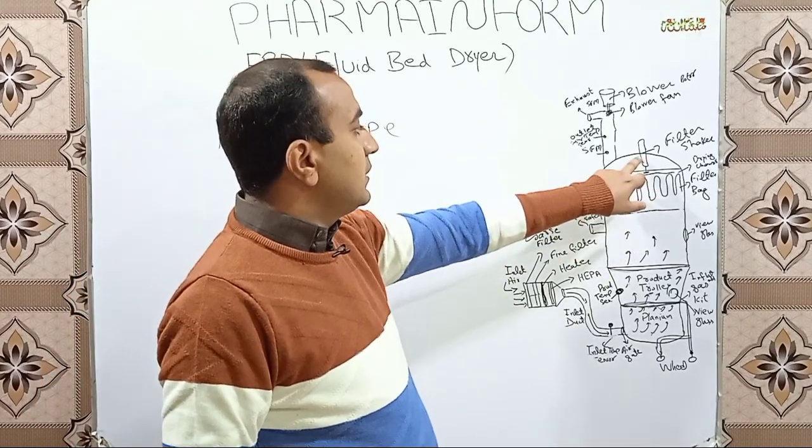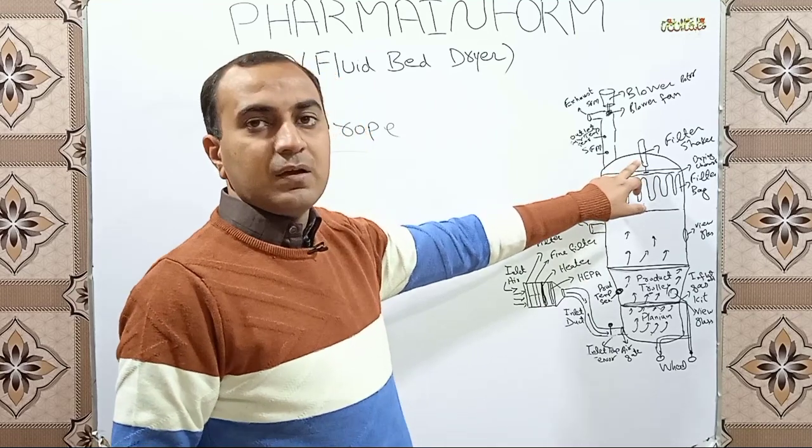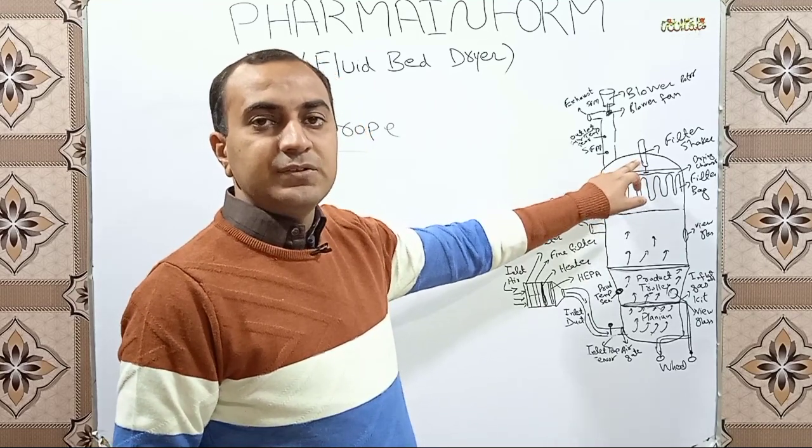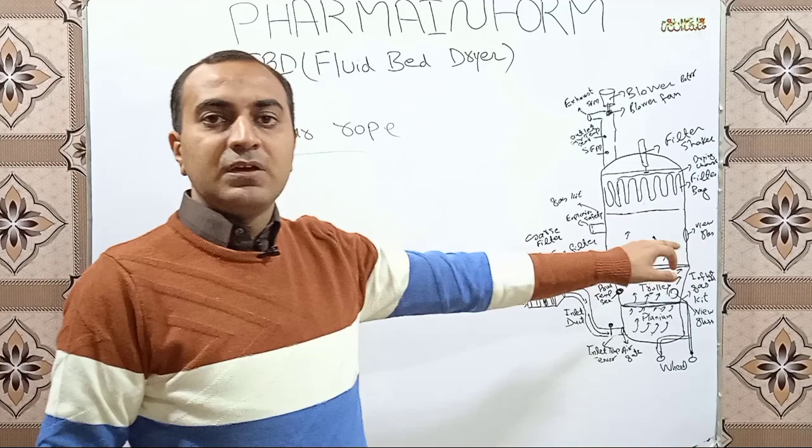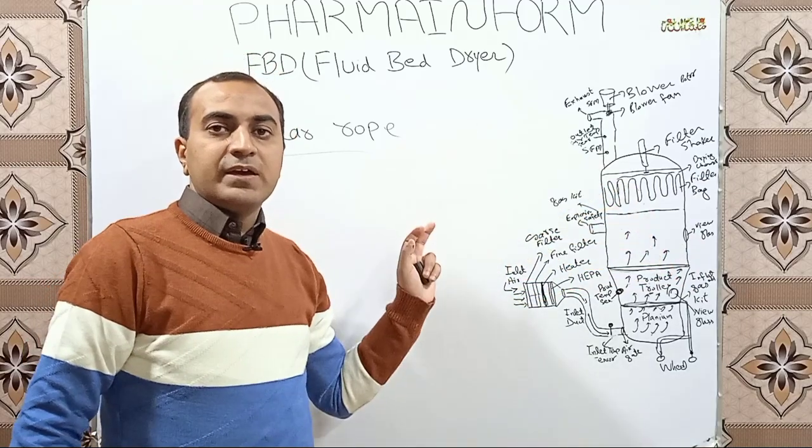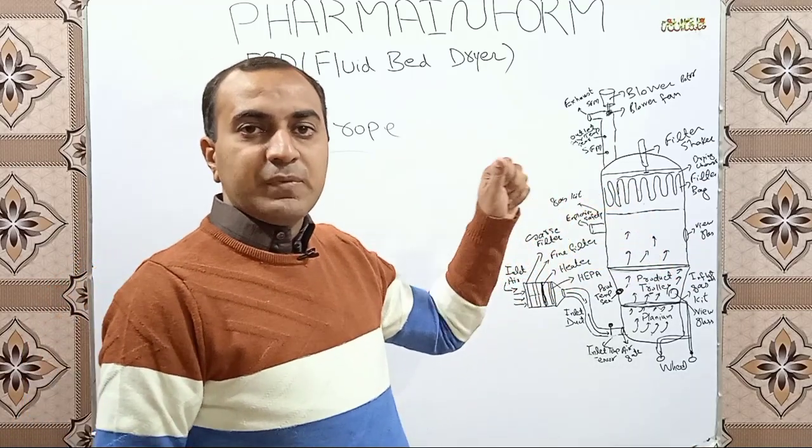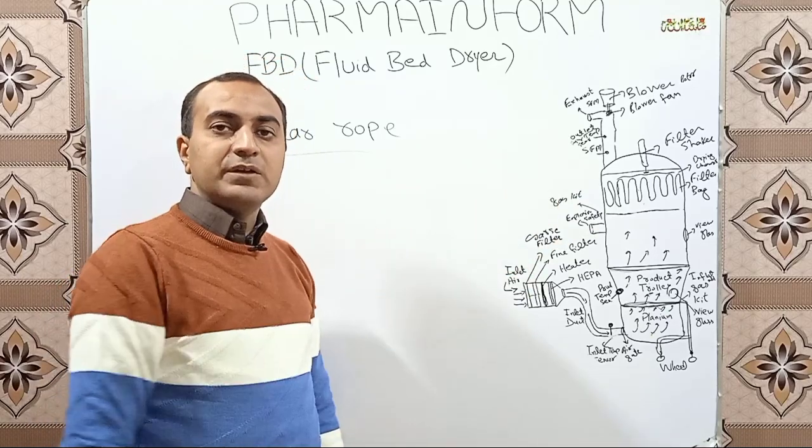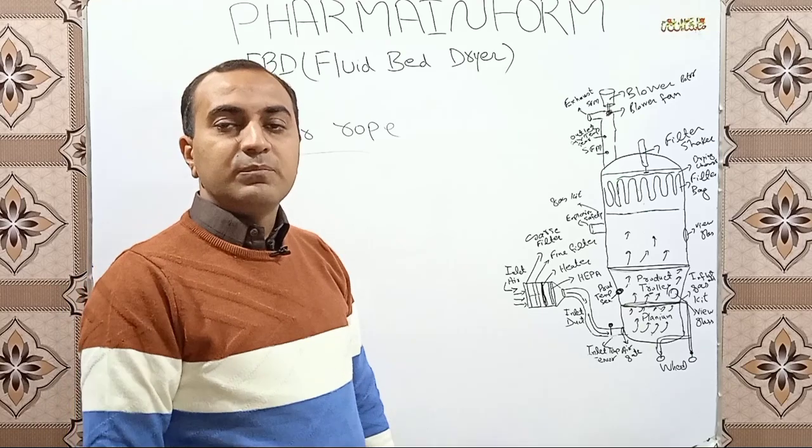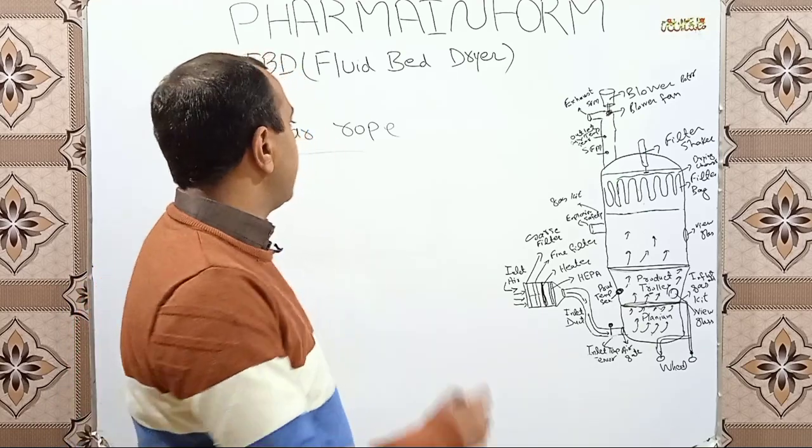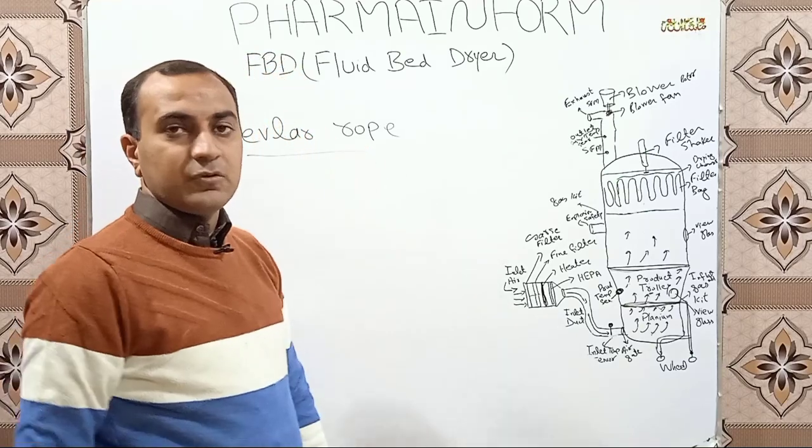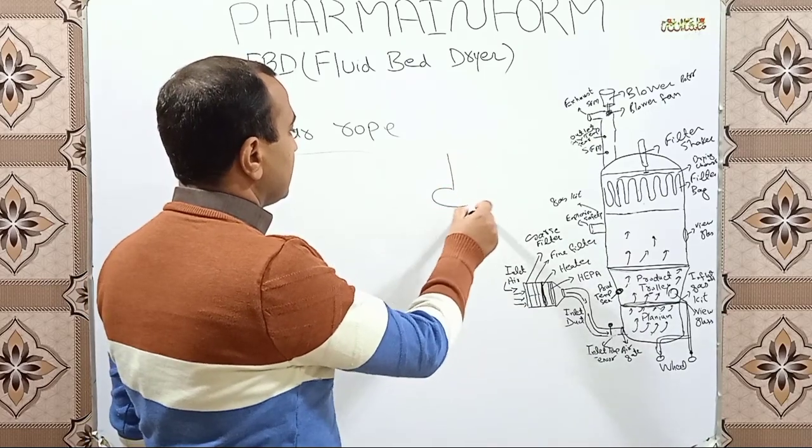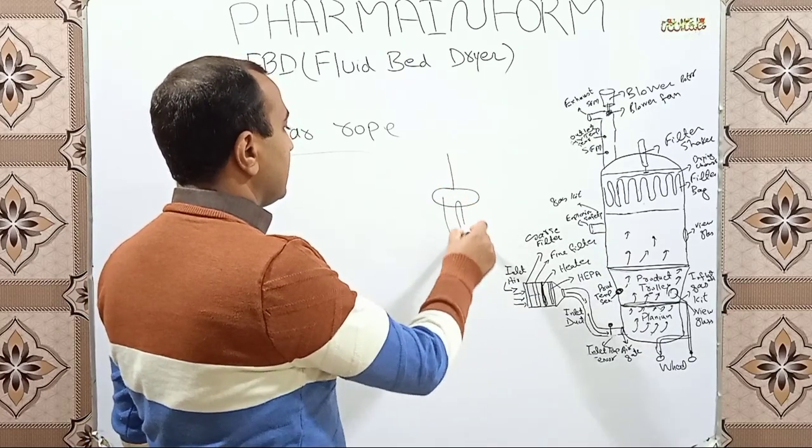These are hanged in the drying chamber with the help of a stand, and this stand is attached or this filter is held and remains in hanging position by using a rope. Basically, this rope is known as Kevlar rope.